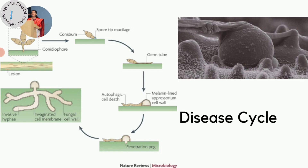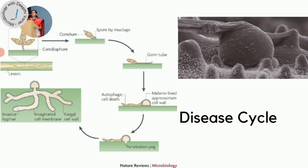The conidia are provided with a sticky mucilage that helps them adhere to the surface of the plant or rice seedling. Once adhered, the spore germinates and forms a germ tube, at the end of which a melanized appressorium is formed. The melanized appressorium is a structure with very high turgor pressure that aids penetration into the cell. From this appressorium, an infection peg or penetration peg is formed that can penetrate the tissue. The melanization of the appressorium is one of the main features that helps the organism penetrate the plant cell.